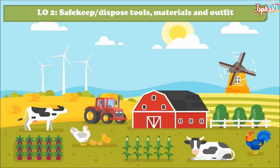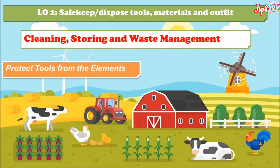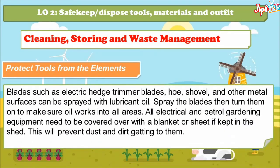For Learning Outcome 2: Safe Keep and Dispose Tools, Materials, and Outfit — Cleaning, Storing, and Waste Management. Protect tools from the elements. Blades such as electric hedge trimmer blades, hoes, shovels, and other metal surfaces can be sprayed with lubricant. Spray the blades then turn them on to make sure oil works into all areas. All electrical and petrol gardening equipment should be covered with a blanket or sheet if kept in a shed to prevent dust and dirt getting to them.